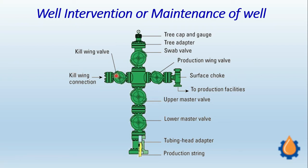This is the kill wing valve. During a maintenance activity when we want to take the entire production tree out by disassembling from here — all the bolting will be removed — we need to arrest the upcoming well formation pressure. In that case, a very heavy fluid is injected through this valve and it moves all the way down to the reservoir. This heavy fluid creates a hydrostatic obstruction, generating a back pressure that arrests the upward movement of the well stream, and that is how the well stops flowing. At that point we can take the production tree out, and this process is also considered a maintenance activity.